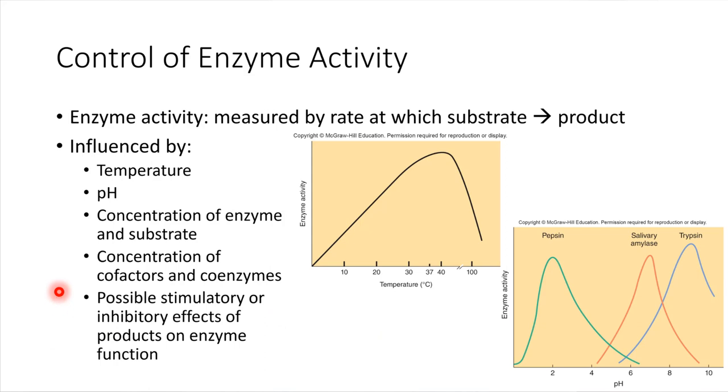Some other things that can influence enzyme activity would be concentration. So how concentrated are cofactors and coenzymes? We'll be coming to these on the very next slide. So hold that thought for right now. And then there are also some things that can be done to sort of modulate enzyme activity. And we will come to that one as well in just a few minutes. So let's go ahead and take a look at cofactors and coenzymes.